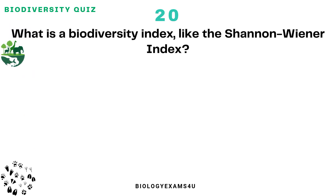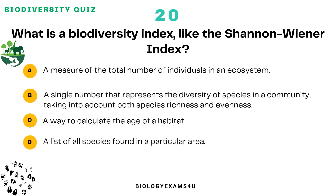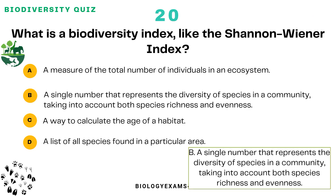Question number 20: What is a biodiversity index like the Shannon-Wiener index? Option A: A measure of the total number of individuals in an ecosystem. Option B: A single number that represents the diversity of species in a community, taking into account both species richness and evenness. Option C: A way to calculate the age of a habitat. Option D: A list of all species found in a particular area. The correct answer is: a single number that represents the diversity of species in a community, taking into account both species richness and evenness.